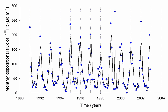As radon itself decays, it produces decay products, which are other radioactive elements called radon daughters, also known as radon progeny. Unlike the gaseous radon itself, radon daughters are solids and stick to surfaces, such as dust particles in the air. If such contaminated dust is inhaled, these particles can also cause lung cancer.